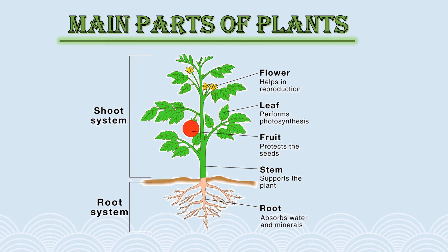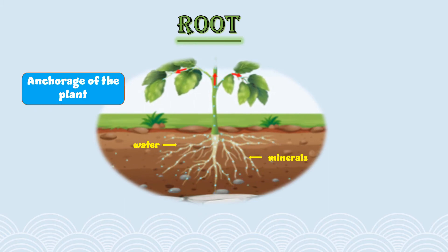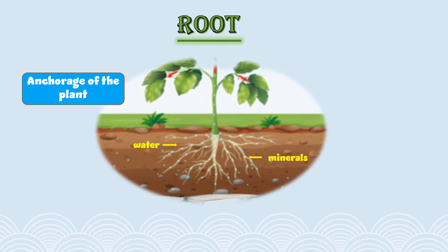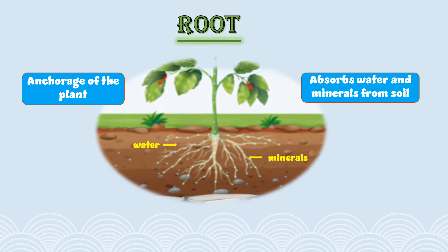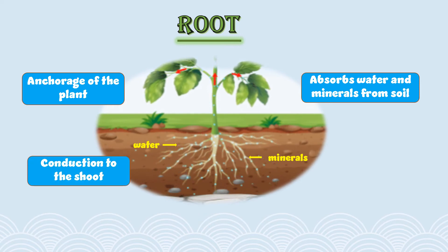Now let's understand the importance of individual parts of the plant. Why is root important? It is the anchorage of the plant — the root is the one which keeps the plant rooted inside the soil. Root also absorbs water and minerals from the soil, which later on helps in the growth of a plant.